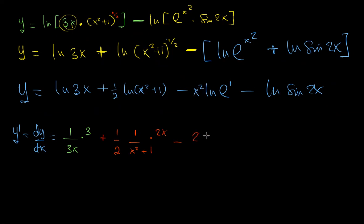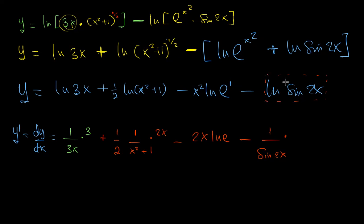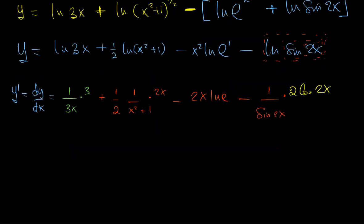Using the power rule, this term gives 2x. ln(e) is just 1, so you can write 2x directly. Then minus: for ln(sin(2x)), ln gives us 1 over sin(2x), then we differentiate sin(2x) using the chain rule. You have one layer outside, another layer inside — differentiating sin(2x) gives 2·cos(2x).